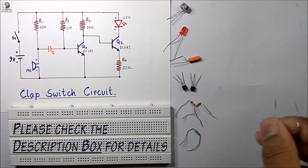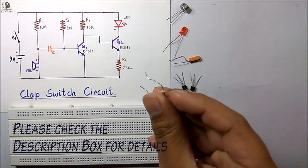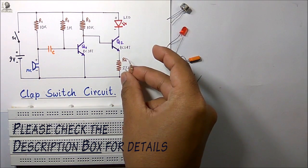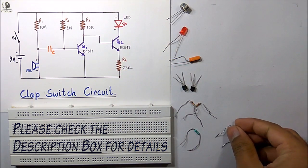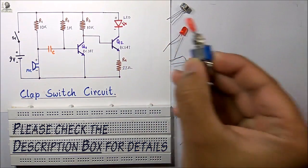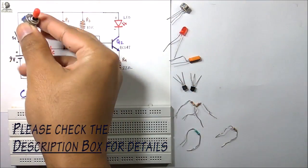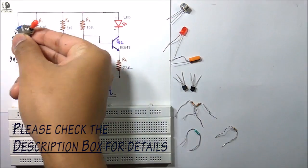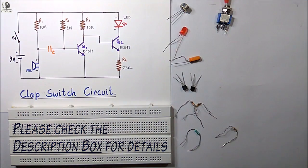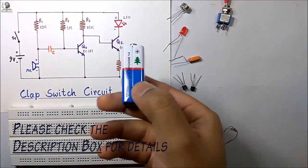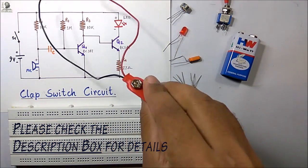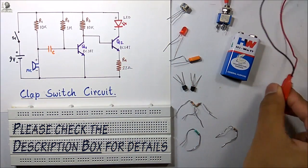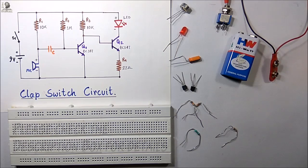We also need 1 one-megaohm resistor, 1 twenty-seven ohm resistor, a switch, a 9 volt battery, a battery clip, and some connecting wires.